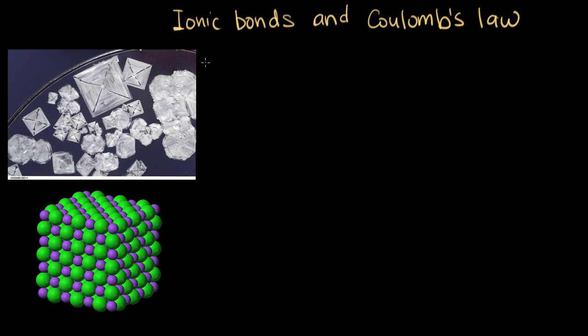Ionic bonds are the bonds that hold together ionic compounds. So basically, it's what holds together cations and anions. An example of a compound that's held together with ionic bonds is sodium chloride, also known as table salt.